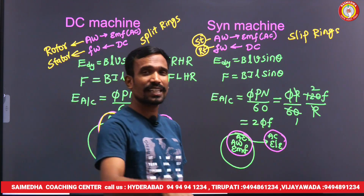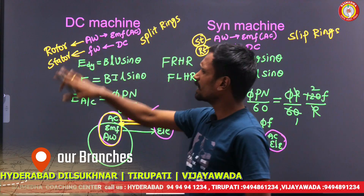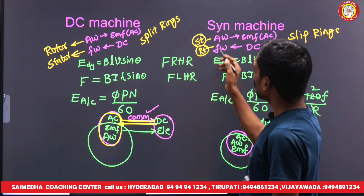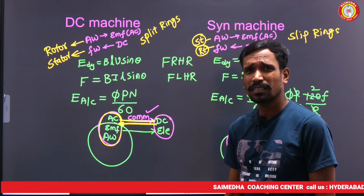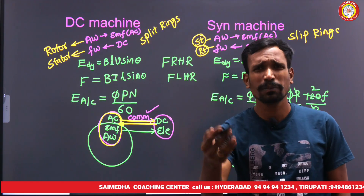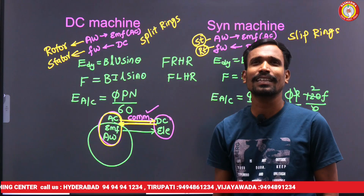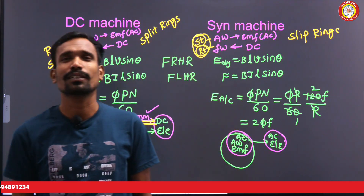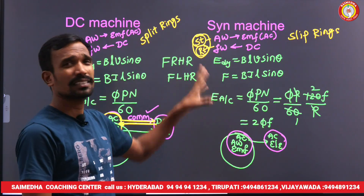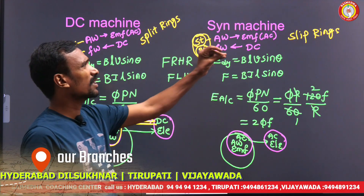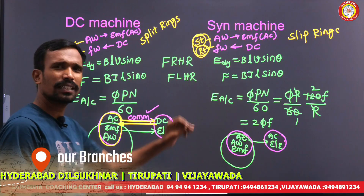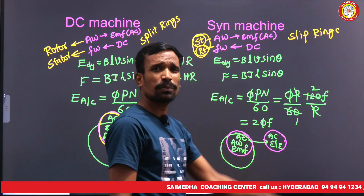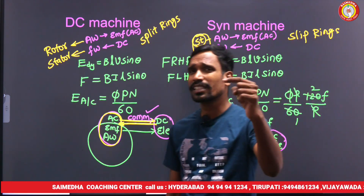If the armature is placed on the rotor, the field winding should be on the stator. That possibility is there. But stationary armature is preferable for high-rating applications. You can use a rotating armature for low-rating applications. In summary: synchronous machines use slip rings; DC machines use split rings and a commutator. Since the commutator is a rotating part, the armature must be on the rotor in DC machines. In synchronous machines, no commutator is needed, so the armature can be placed on the stator.